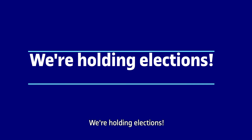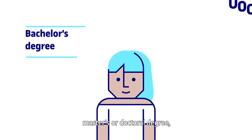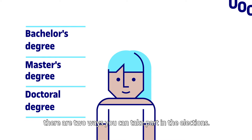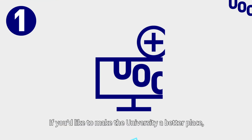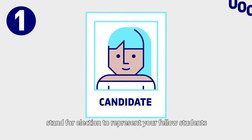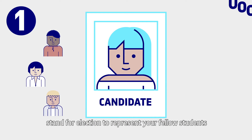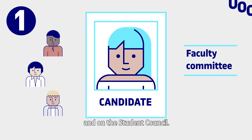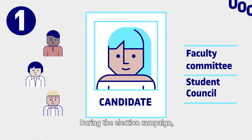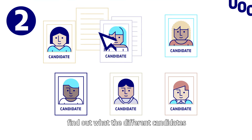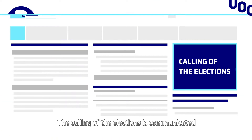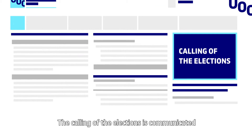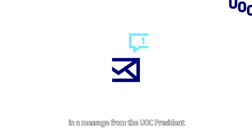We're holding elections. If you're studying for a bachelor's, master's, or doctoral degree, there are two ways you can take part. If you'd like to make the university a better place, stand for election to represent your fellow students on your faculty committee and on the student council. During the election campaign, find out what the different candidates are proposing and vote.